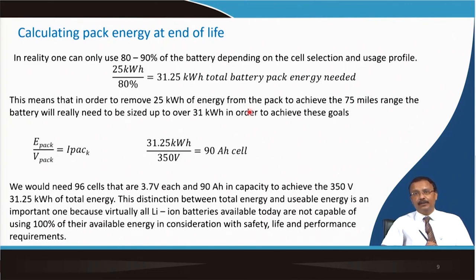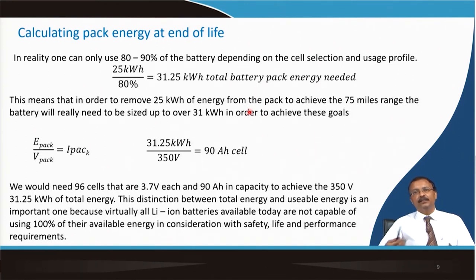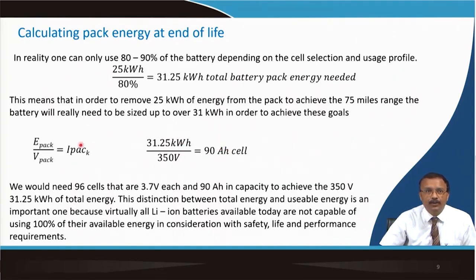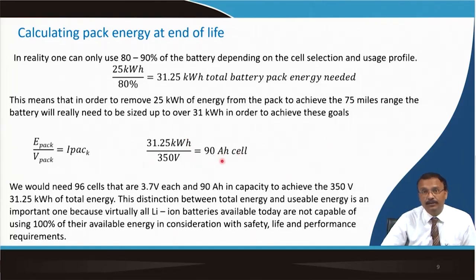A larger pack is a problem because of space constraints. Therefore, high-capacity cells are important and we need to continuously work on battery chemistry — NMC, NCA, graphite, LFP, LMO are existing materials but new chemistry is needed. Dividing pack energy by pack voltage gives the required current: 31.25 kWh ÷ 350 V gives 90 Ah. So we need 96 cells, each 3.7 V and 90 Ah, to achieve 350 V and 31.25 kWh total energy.